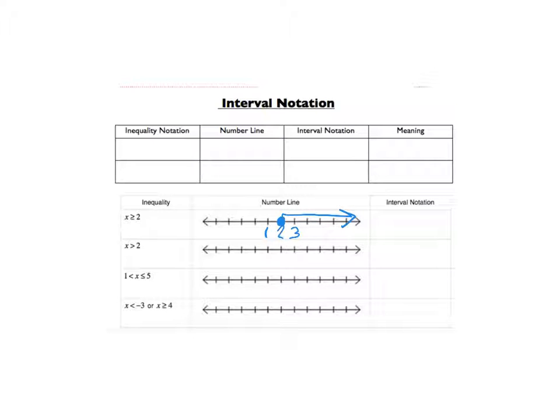Interval notation, you always look from left to right. So we're going to do bracket on 2, because it's closed circle, comma, positive infinity, parenthesis.